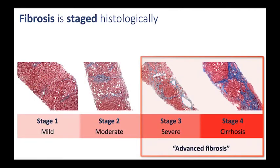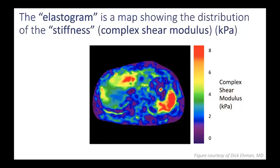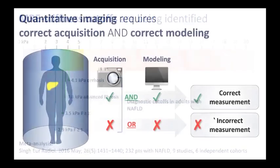Switching to fibrosis: fibrosis is staged histologically. There are five stages of fibrosis; four of the stages are shown on this slide. Patients with advanced fibrosis — stages 3 and 4 — have the worst prognosis and from a management point of view need to be followed most carefully, often needing surveillance for esophageal varices and for HCC. MRI can assess liver fibrosis through multiple methods, but the most advanced and most validated method is to measure liver stiffness. MR elastography generates an elastogram — a map showing the distribution of stiffness, mathematically known as the complex shear modulus in units of kilopascals. The MRE stiffness cutoffs that correspond to different stages of fibrosis are being identified, and a stiffness value of about 3.8 kilopascals suggests the presence of advanced fibrosis.